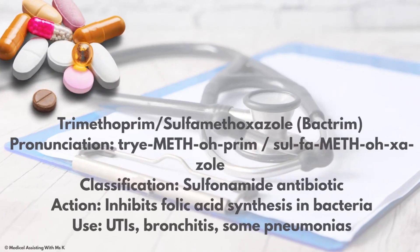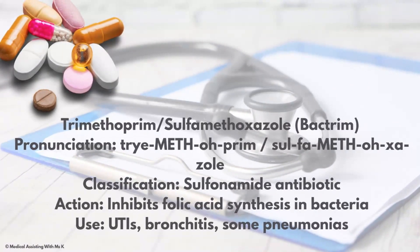This next one looks intimidating, but once you learn how to pronounce certain words it won't be. Bactrim is the brand name. The generic is trimethoprim/sulfamethoxazole — notice the pronunciation breakdown: sulfa-methox-azole. Classification: sulfonamide antibiotic. Action: it inhibits folic acid synthesis in bacteria. Use: UTIs, bronchitis, and some pneumonias.